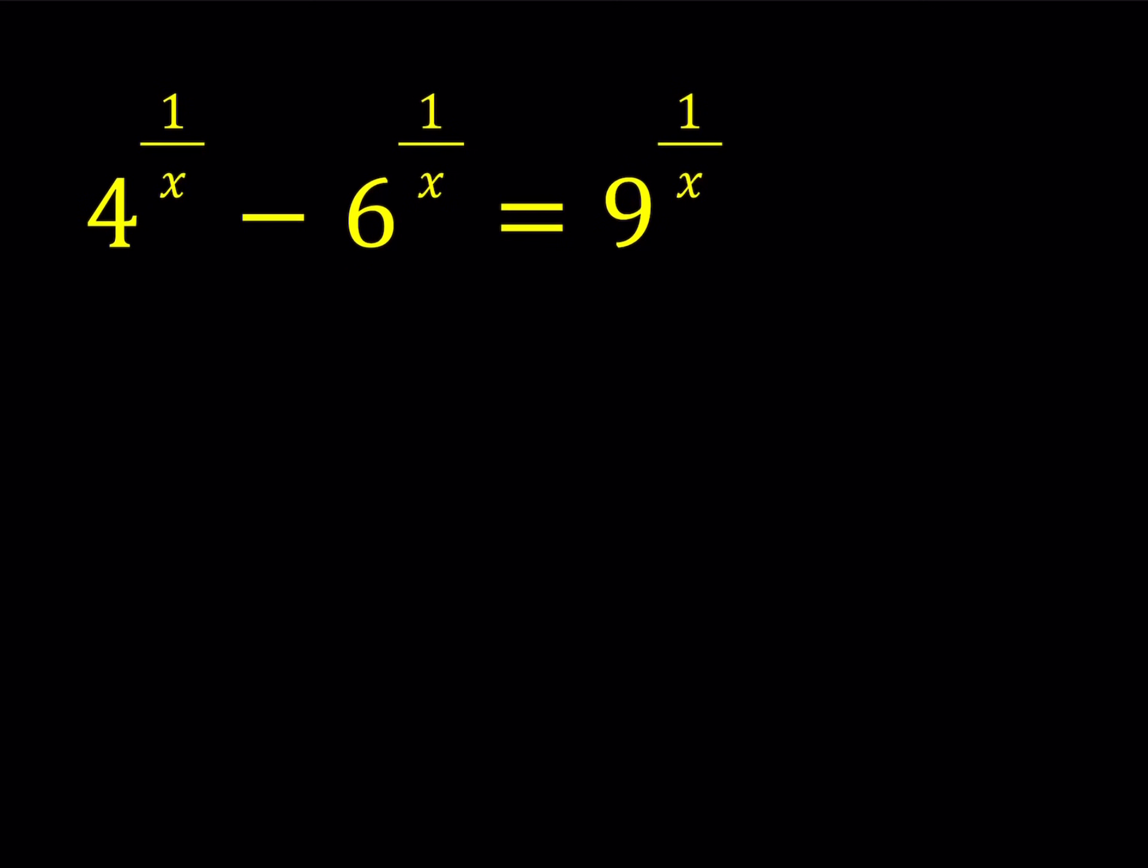So we do have 4 to the power 1 over x, 6 to the power 1 over x, and 9 to the power 1 over x. So here's what we're going to do. We want to use substitution here and we want to make this equation, turn it into something that we can solve. Because as is, this is like a crazy equation with exponents. The bases are different, it's just all over the place.